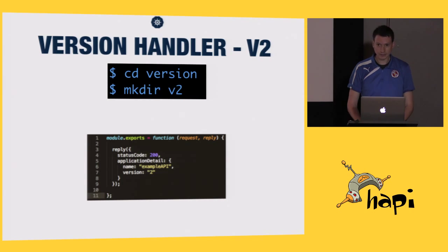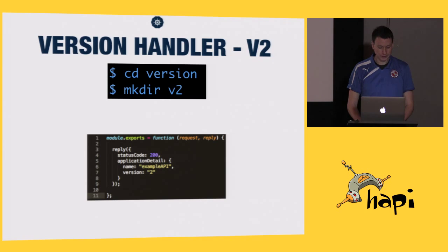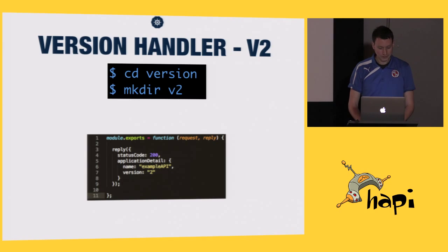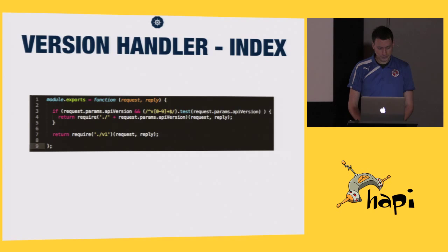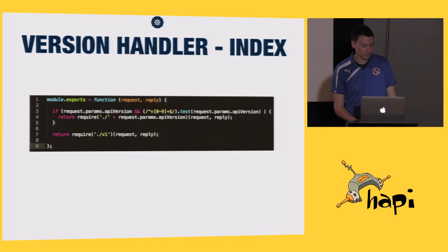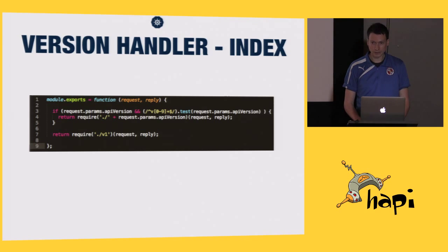Version 2 gets really fancy — almost as big of an announcement as Hapi version 8 today. It's that we now give you a status code, and we have our breaking change. Instead of the name and the version being directly in the response object, we now have this application detail object. So then when we move over to our version handler, this is where we're going to start looking at the versioning.